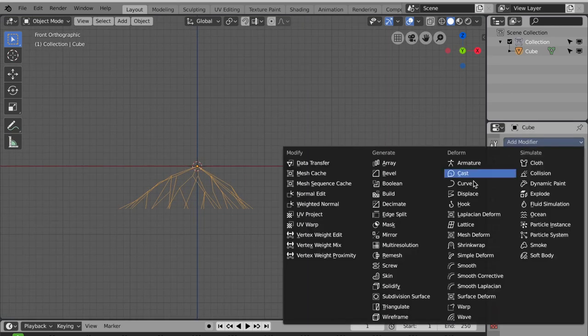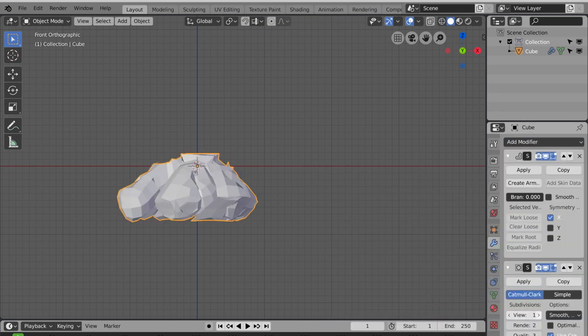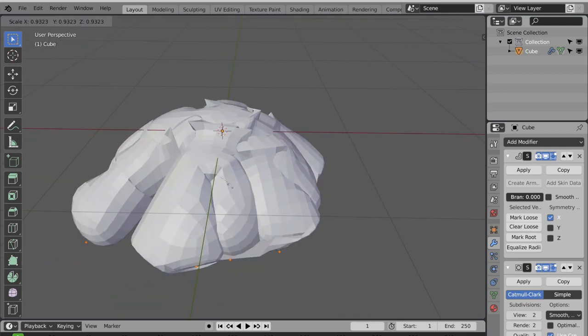To give the wireframe some volume, I applied a skin modifier and a subsurface subdivision modifier. With the two modifiers added, I continued to adjust the shape of the roots until I was happy with the look.